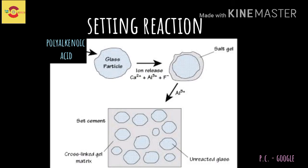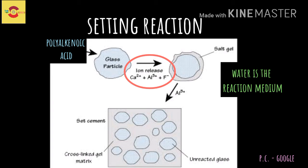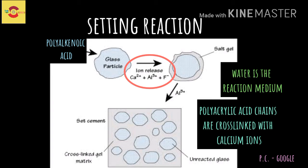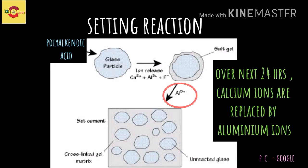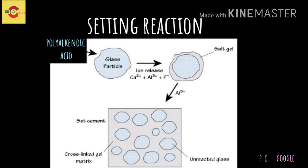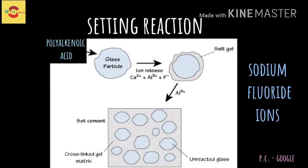In the setting reaction of glass ionomer cement, when the powder and liquid components are mixed, the acid starts to dissolve the glass particle, releasing calcium, aluminum, sodium, and fluoride ions. Water is basically the reaction medium. The polyacrylic acid chains are then cross-linked by the calcium ions. However, over the next 24 hours, the calcium ions are replaced by the aluminium ions. The sodium and fluoride ions from the glass do not participate in the cross-linking.